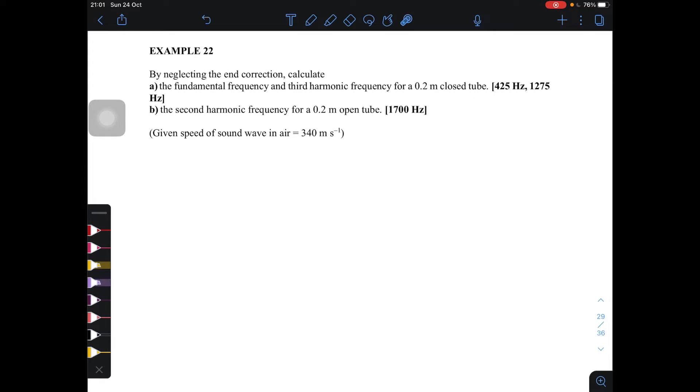Okay, so in here, it's stated that by neglecting the end correction. In physics, we actually need to consider the end correction in each situation for the pipe. But in your syllabus, we don't consider this end correction. So you can just ignore when you see neglecting the end correction. It doesn't mean anything actually. In the syllabus, we don't include the calculation for end correction.